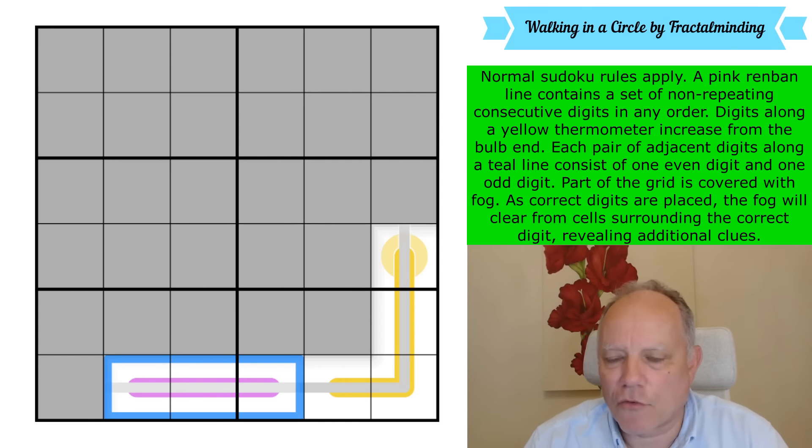The Renban lines which are pink or purple contain a set of non-repeating consecutive digits in any order. So this might for instance say three, five, four on it. Digits along a yellow thermometer increase from the bulb end, so this one might go one, two, four, six. Each pair of adjacent digits along a teal line consists of one even and one odd.